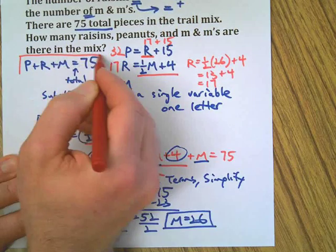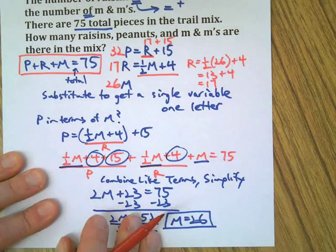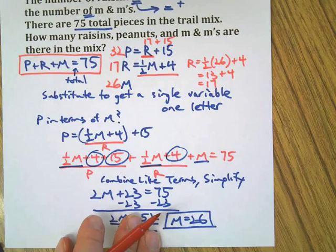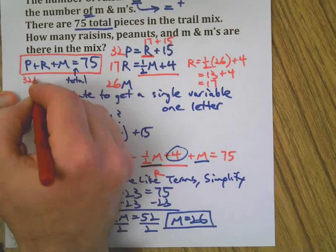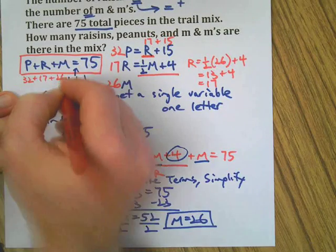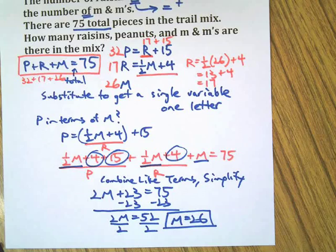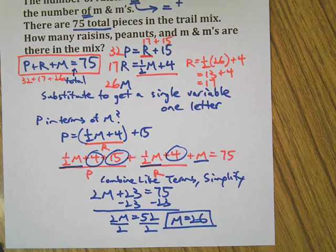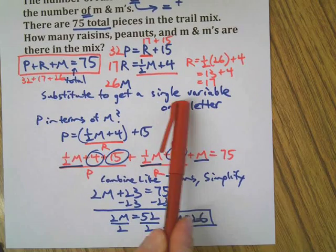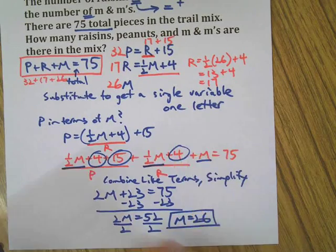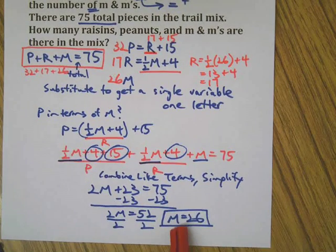And then finally the number of peanuts is raisins plus 15, so 17 plus 15 makes 32. And here's our final proof: when I add those three answers together, it should total 75. So 32 plus 17 plus 26, and you guessed it, it does equal 75. So that's the answer.